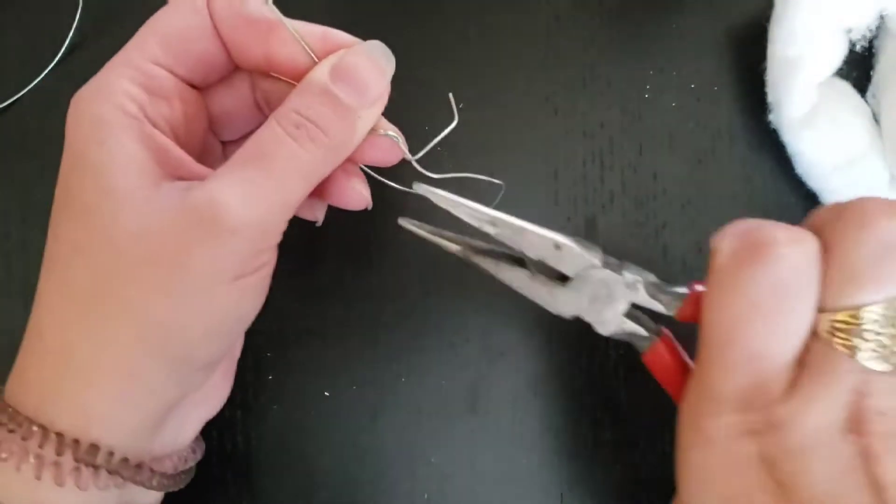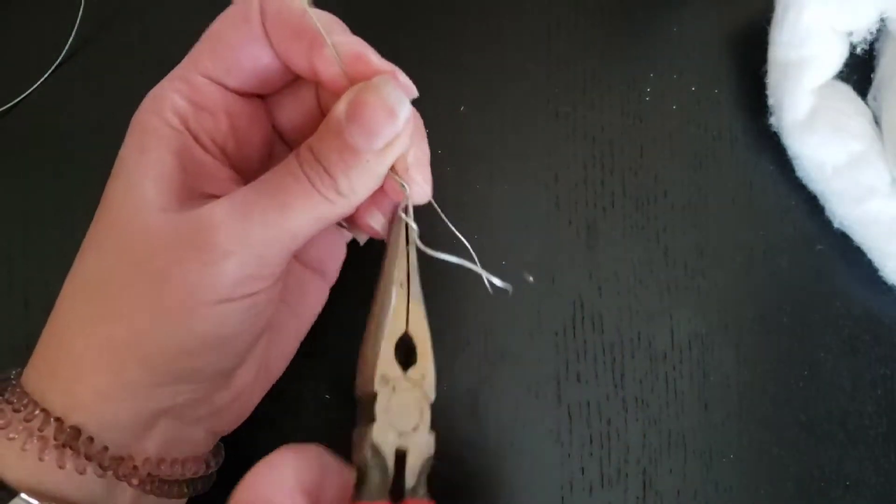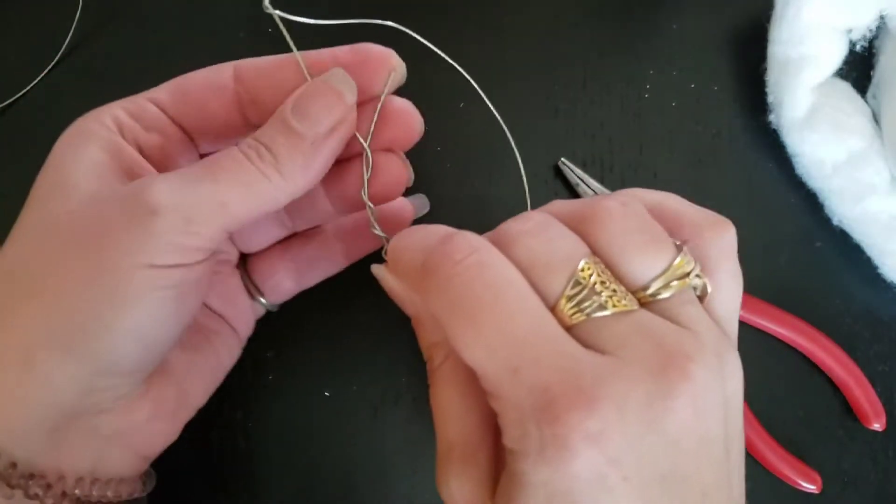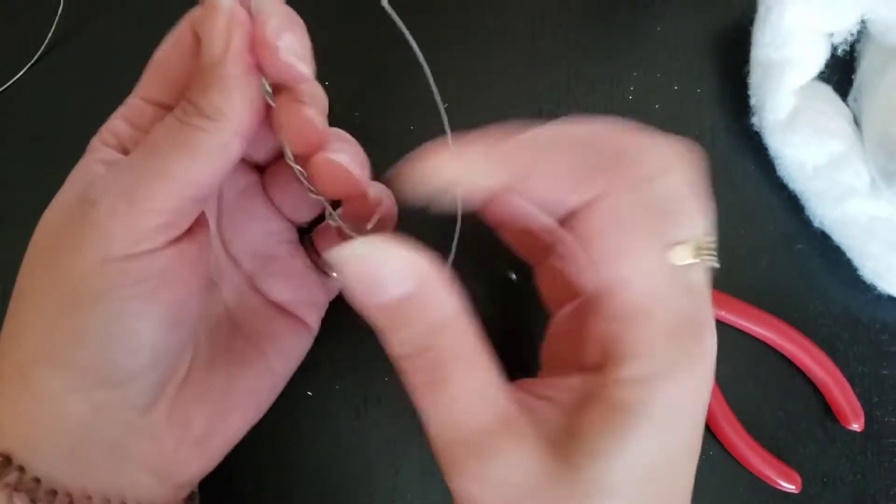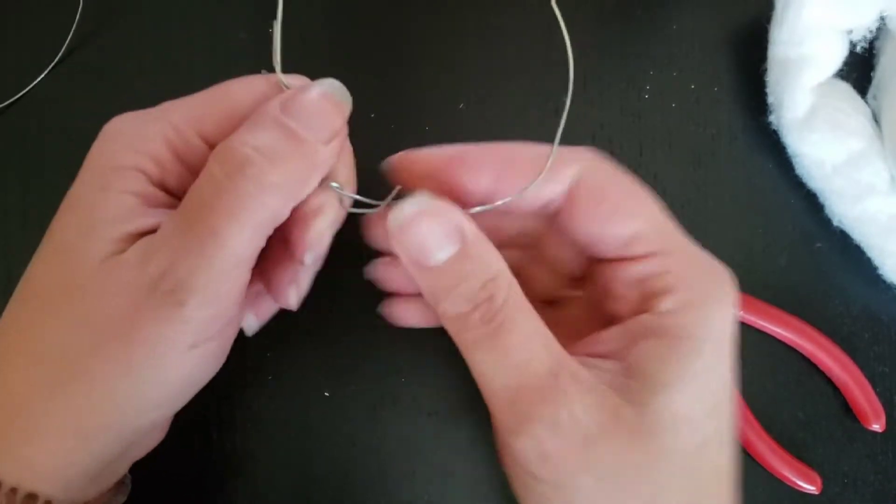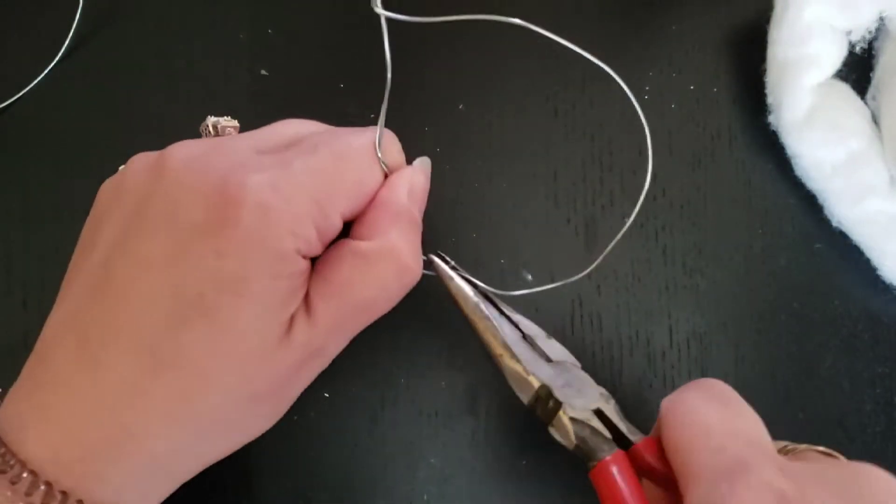And then you're just going to loop that around itself. Pliers are helpful with this. It's going to make a nice little round loop. It does not have to be perfect.